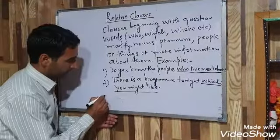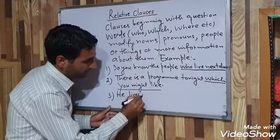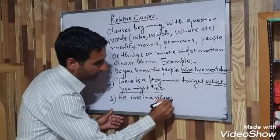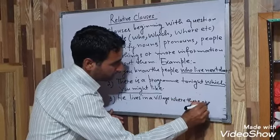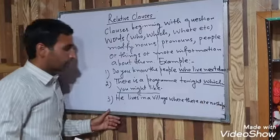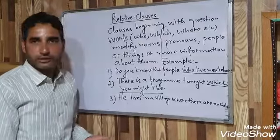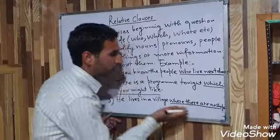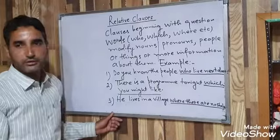Another example: 'He lives in a village where there are no shops.' If we write only 'he lives in a village,' there is not clear information about this village. But when we add 'where there are no shops,' we come to know about this village. So 'where there are no shops' is the Relative Clause here.